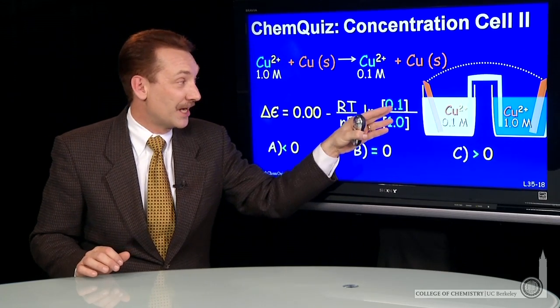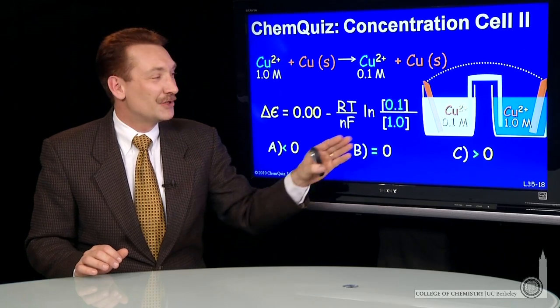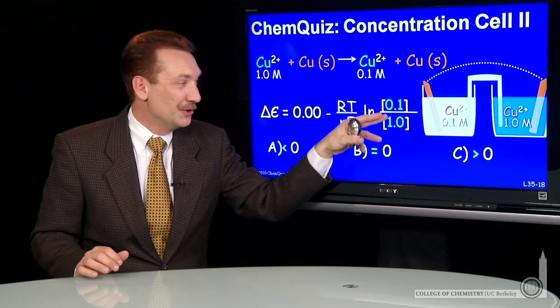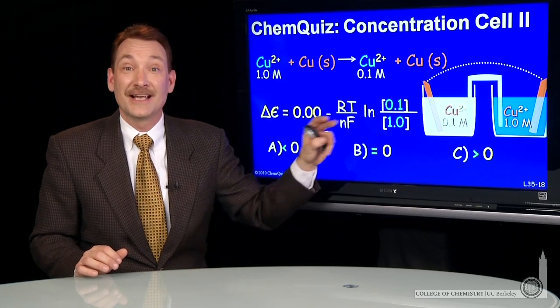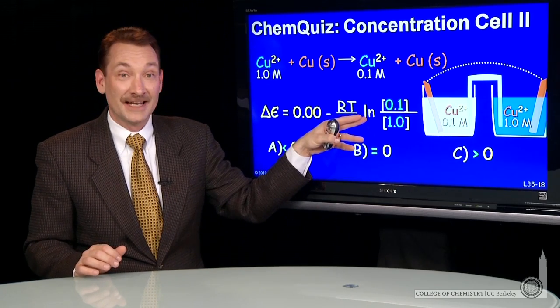We don't have 1 molar on both sides. We have 0.1 molar and 1 molar. So we have a situation where we have reactants over products, the Q inserted here. And that Q is less than 1. That means this natural log term is negative.